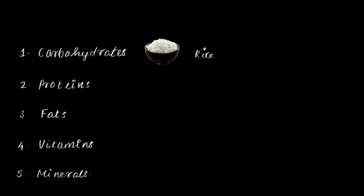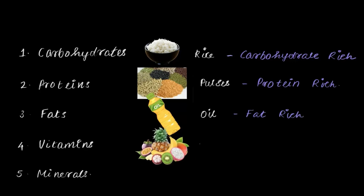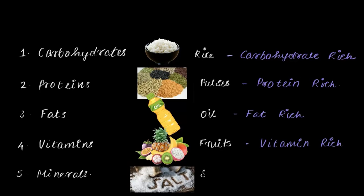For example, rice contains a large amount of carbohydrates and is termed carbohydrate-rich food. Pulses are a major source of protein and are known as protein-rich food. Oil is a fat-rich food. Fruits contain essential vitamins required by our body and are called vitamin-rich food. Salt used in our daily life is a major source of minerals and is a mineral-rich food.